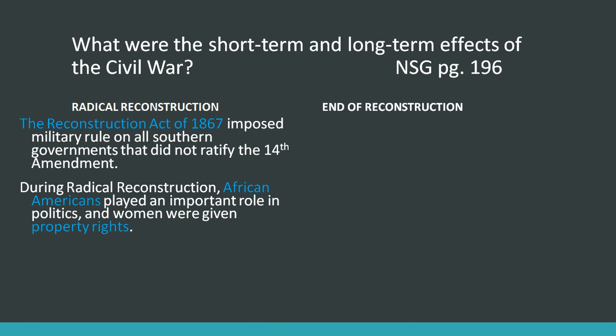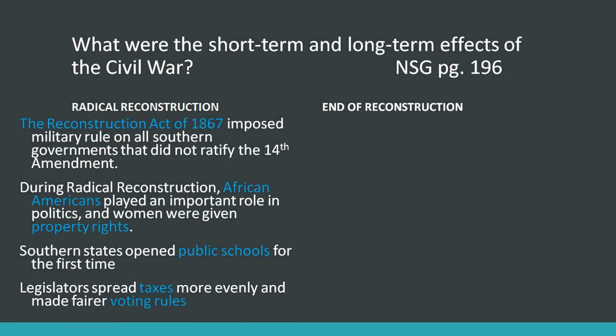During Radical Reconstruction, African Americans played an important role in politics and women were given property rights. Southern states opened public schools for the first time, later spread taxes more evenly and fairly, and implemented more fair voting rules overall.